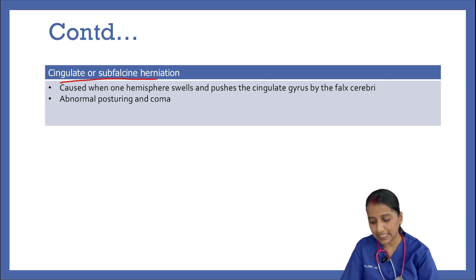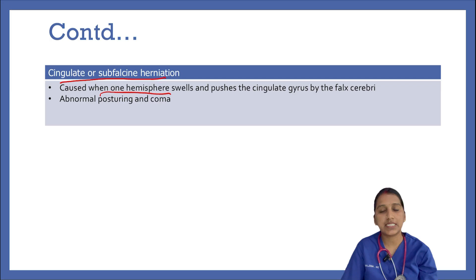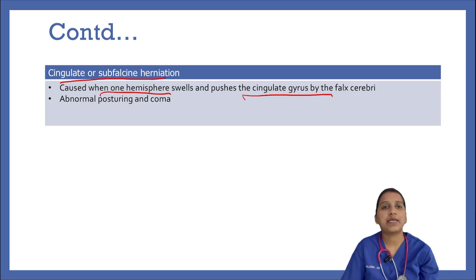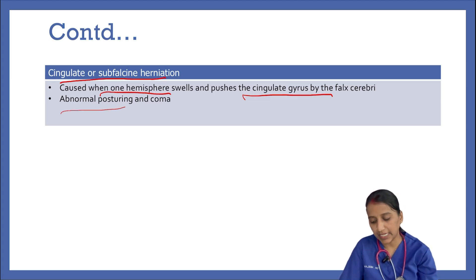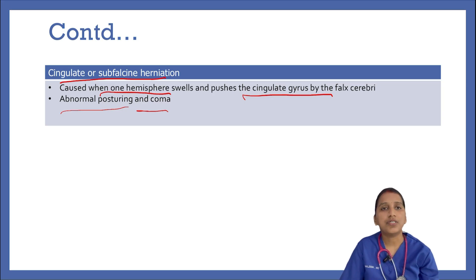Coming to cingulate or subfalcine herniation. This is caused when one hemisphere swells and pushes the cingulate gyrus under the falx cerebrae. This does not put as much pressure on the brainstem as other types of herniation, but it may interfere with the blood vessels in the frontal lobe close to the site of injury, i.e., the anterior cerebral artery. The patient may have abnormal posturing and further coma. Interference with blood supply can cause a dangerous rise in ICP that can lead to more dangerous forms of herniation.